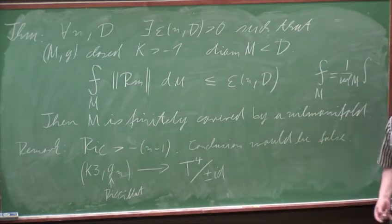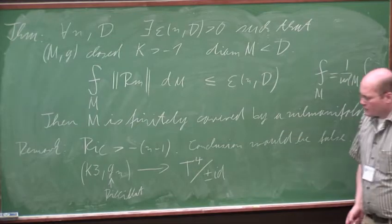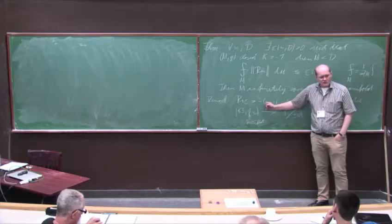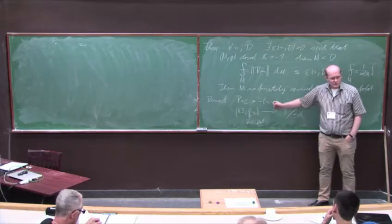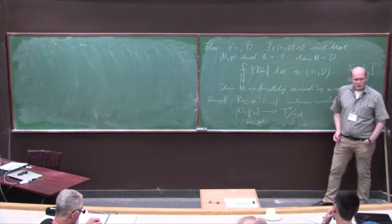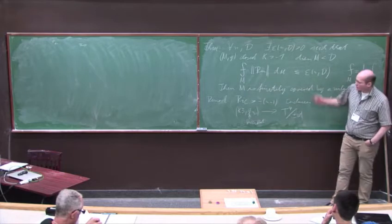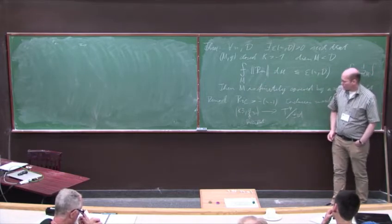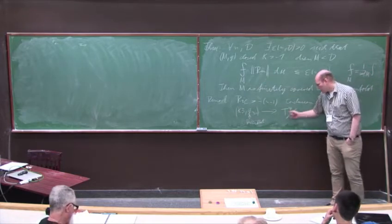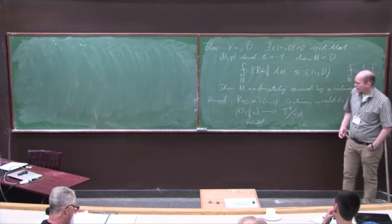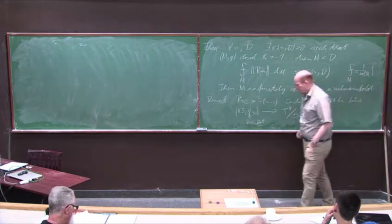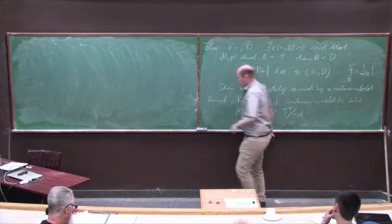It's still an interesting question what happens with a Ricci curvature bound — what kind of manifolds will show up. I think even the non-collapse case in this setting is very interesting.